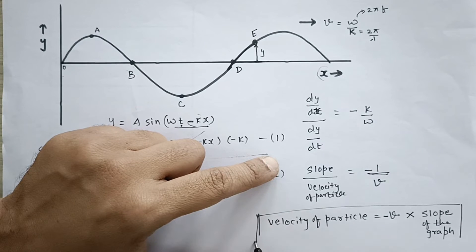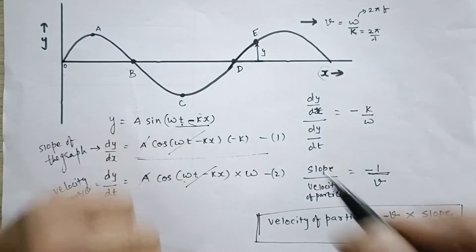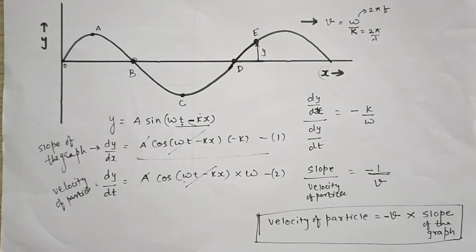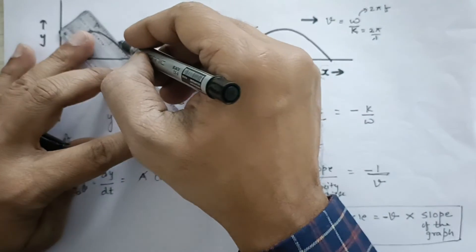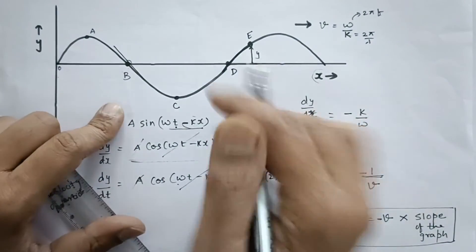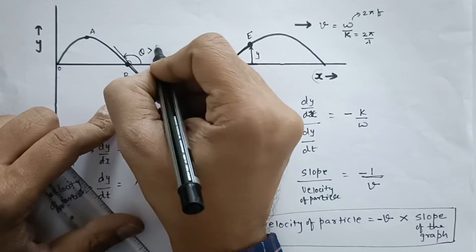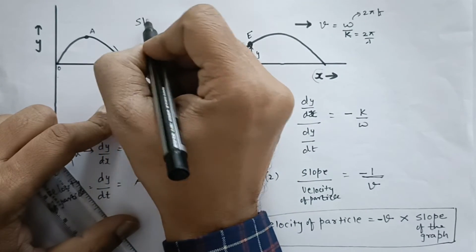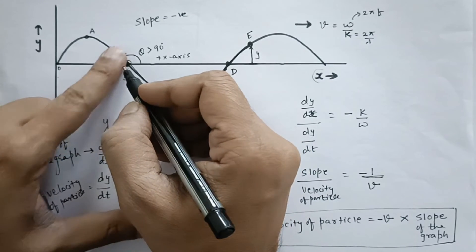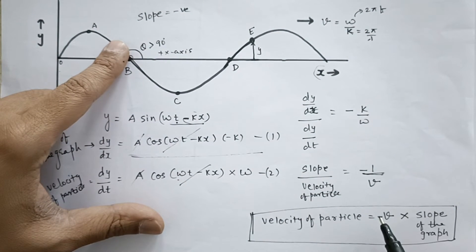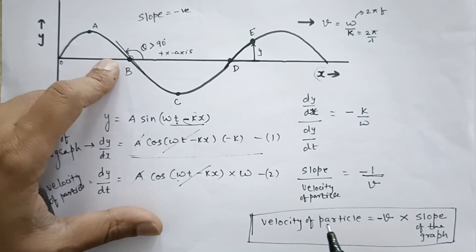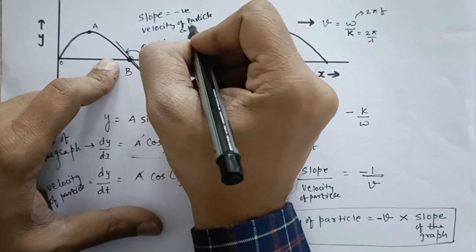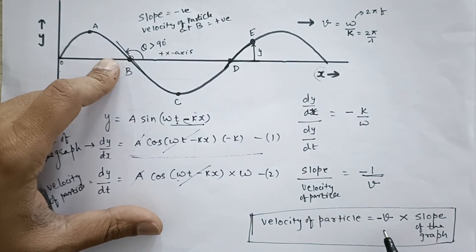This relation can be applied in two different ways. Let us take all the particles and investigate their velocities and slopes. For particle B, if I draw a tangent, it makes an obtuse angle - greater than 90 degrees - with respect to the positive x-axis. That means the slope is negative at point B. Negative slope times the negative sign means the particle's velocity is going to be positive. So the velocity of particle B is positive as per this formula.